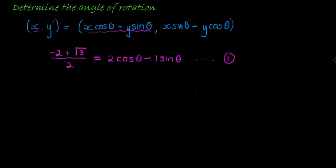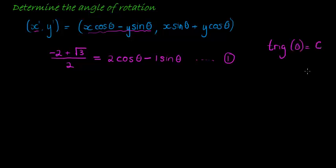We only have one unknown to solve, but the problem is that unknown appears in two different trig functions. We want to eliminate one of those functions, because in order to solve an unknown inside a trig function, we need a single trig ratio equal to a constant — some form of sine, cos, or tan of theta equal to a constant. At this point, it's impossible to get a single trig ratio equal to a constant from this equation alone.